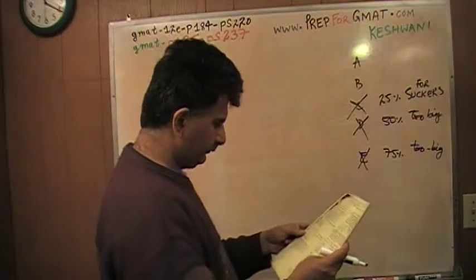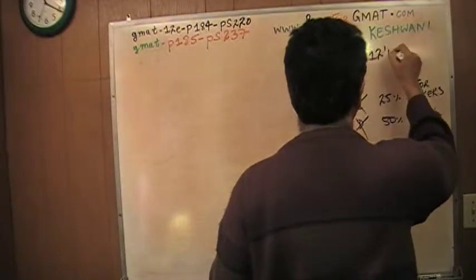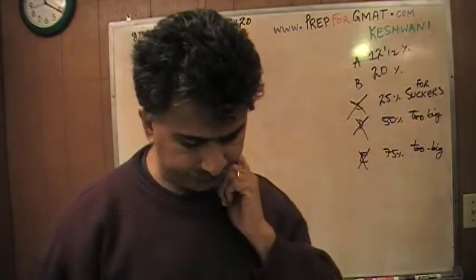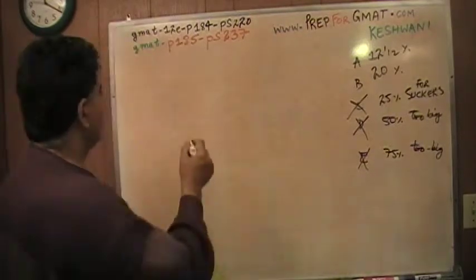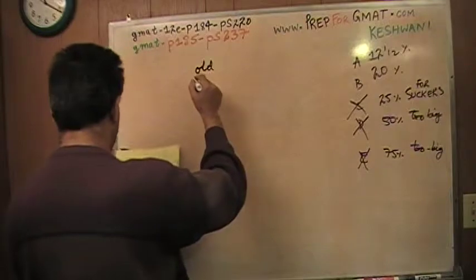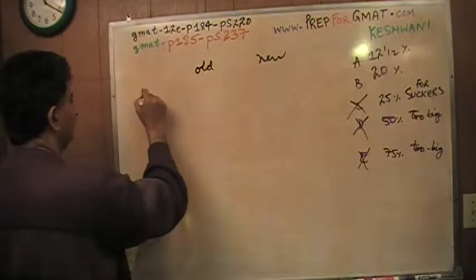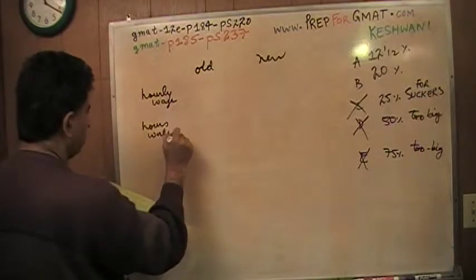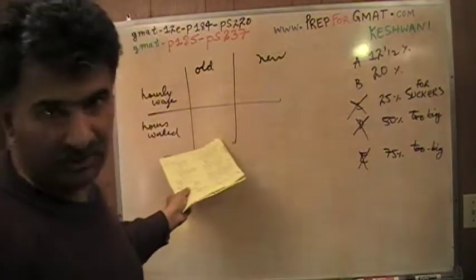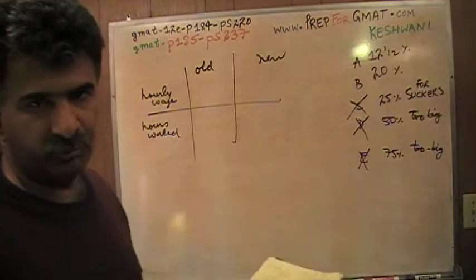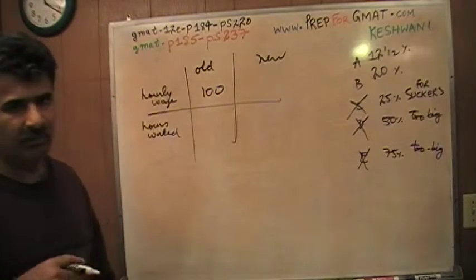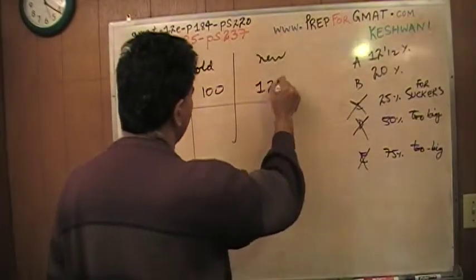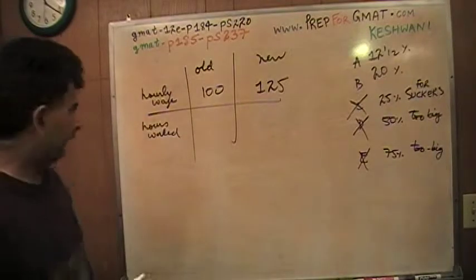What does A say? 12.5% and B says 20%. So I'm going to start plugging in some numbers and see what happens. So listen to what I have to say here. Here's my old number of hours that the guy was working. Old hours. Well here's the old situation. Here's the new situation. Here's the hourly wage. And here's the hours worked. Of course in the real exam I'm not going to sit there and make this chart like that. I'm just doing it for your benefit. You just have to do it out yourself quickly. So make up some hourly wage. I'm just going to give him $100 an hour. Why $100 an hour? Because it's easier to work with in terms of percentage. And since his hourly wage went up by 25% his new hourly wage is going to be $125 per hour.